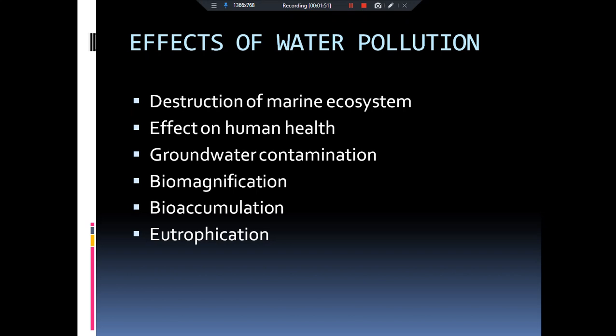Another thing is that when oil is spilled, the amount of solar radiation will not be able to penetrate into our water bodies. Therefore, all of the producers present — algae and plants present in our water bodies — they cannot do photosynthesis. Therefore, oxygen will not be released, and the amount of oxygen will decrease.